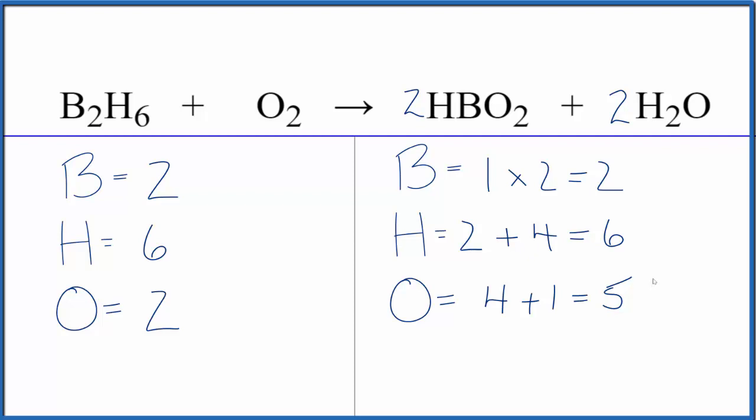And then let's update the oxygens. So two times two is four oxygen atoms, plus two times one, that's two. So we have six oxygen atoms, put a three right here, two times three, that gives us six. We're done.